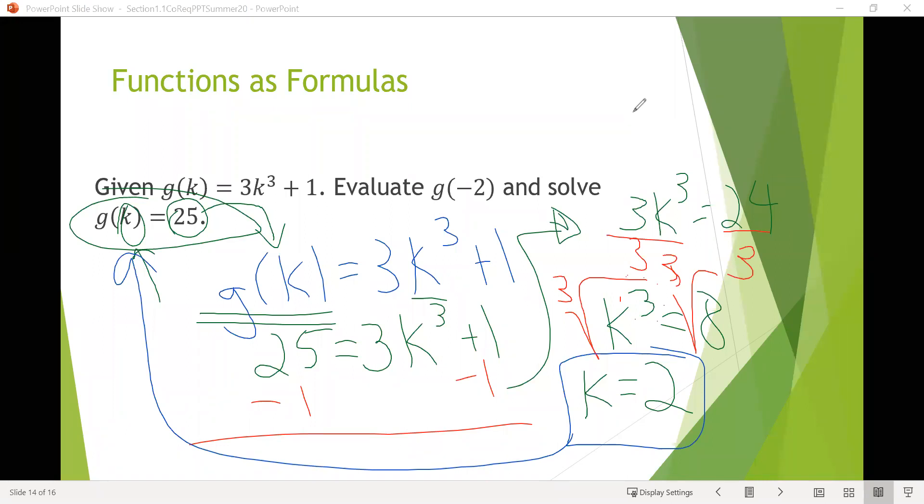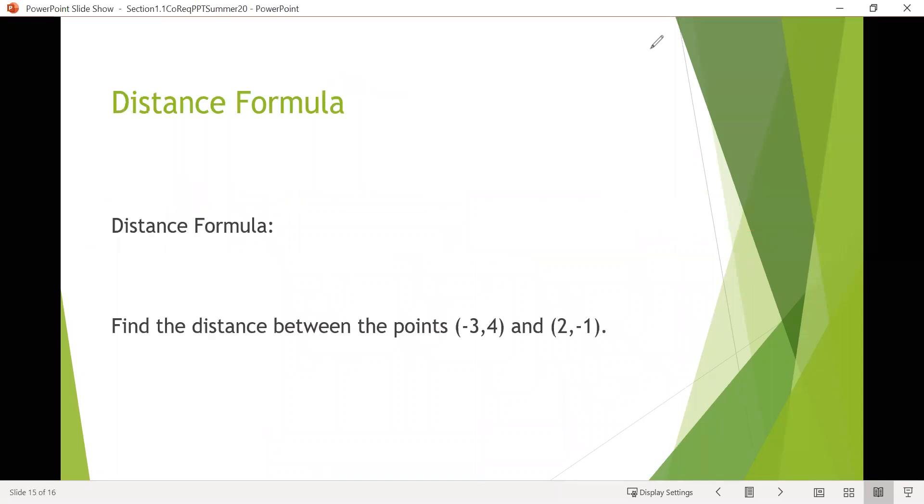A couple of final things from this section. First, the distance formula. Usually I would go over where the distance formula comes from, but for the sake of time I'm just going to write it down. The distance formula allows us, if we're given two points in coordinate space or two coordinates, we can find the distance between them in whatever units we're measuring things in. Our distance formula is d equals square root of x sub 2 minus x sub 1 squared plus y sub 2 minus y sub 1 squared.